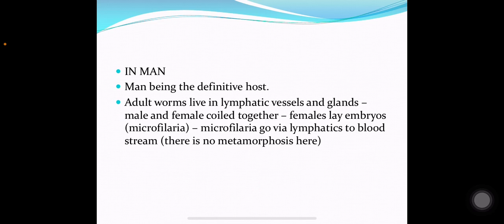In man, being the definitive host, the adult worms live in the lymphatics and lymph glands. The male and female worms remain coiled together. The female lays embryos, which are known as microfilaria. The microfilaria travel via lymphatics to the bloodstream, and there is no metamorphosis at this stage.